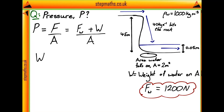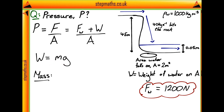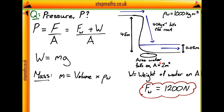Going ahead and looking at the weight: the weight of water on top of this area is equal to the mass of the water on top multiplied by the gravitational field strength g. To find the mass, we need to find the volume of water on top of this area. We've been given the depth of 0.05 metres, which we haven't used yet. The area of the rock is 2 metres squared and the depth is 0.05 metres, so the volume above that area can be found using these two values together. The mass is then volume multiplied by the density given in the question.